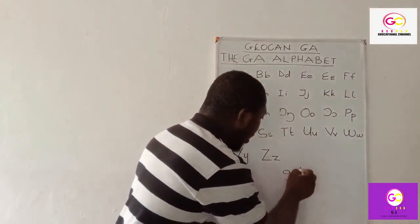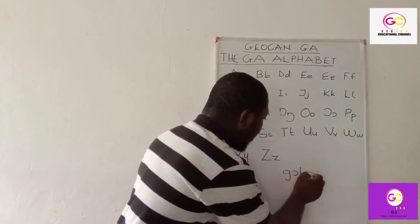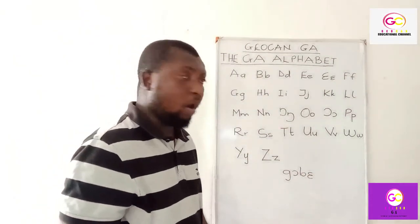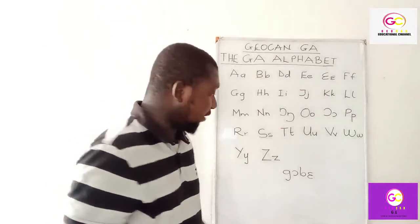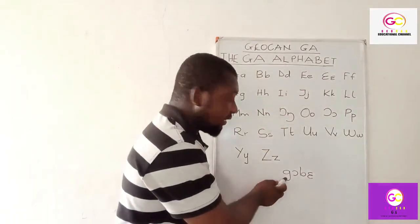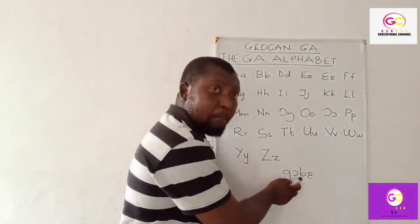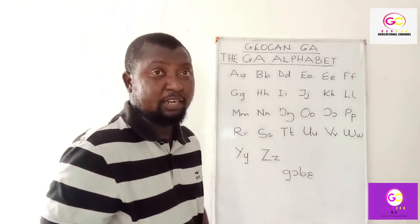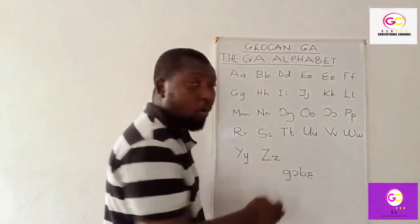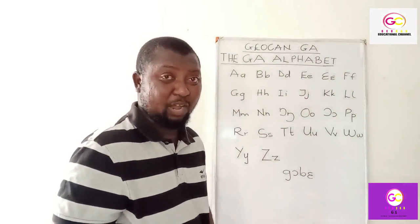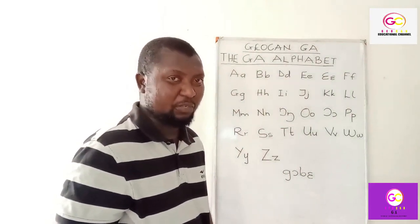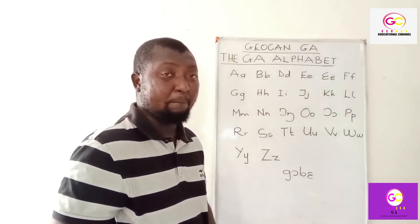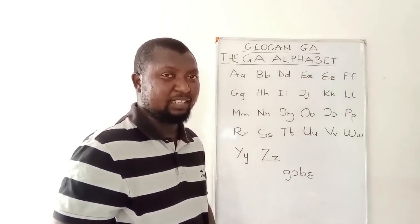The word is spelled G-O-B-E. Remember, this is 'g,' this one is 'o,' then 'b,' and this one is 'e.' The pronunciation is: 'g-b.' Pronounce: 'g-b.' Good. 'G-b' simply means 'beans with plantain.'